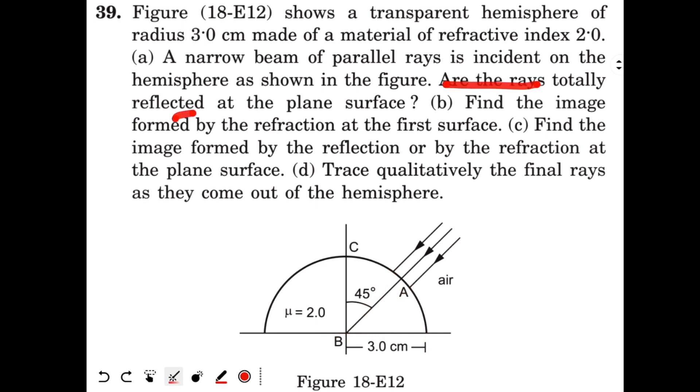So the question is asking, are the rays totally reflected at the plane surface? First, what is the critical angle? Critical angle will be sin⁻¹(1/μ). Since μ is 2, we get 30 degrees. And 30 degrees is much smaller than 45 degrees, 40 or 50 degrees. So all the rays will get reflected from this surface. So yes, the answer to the first part is yes.